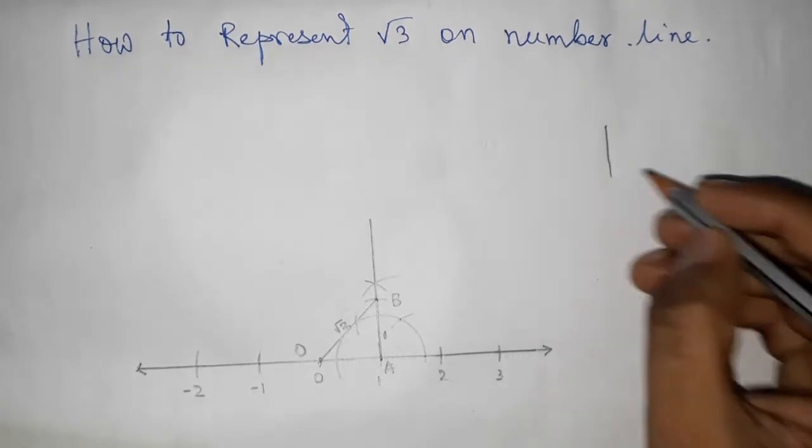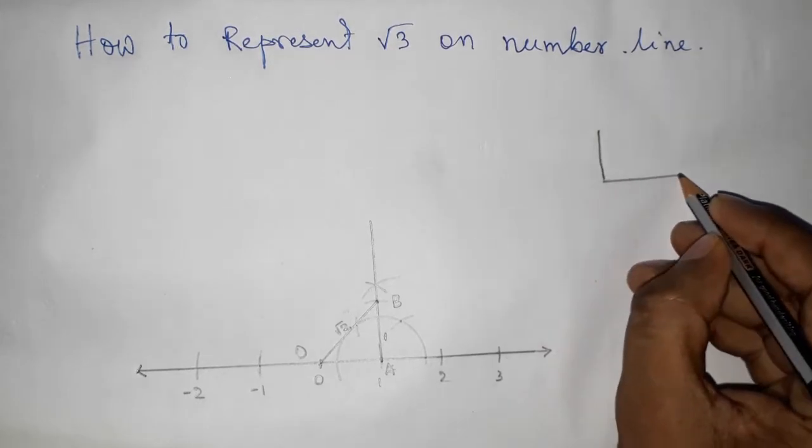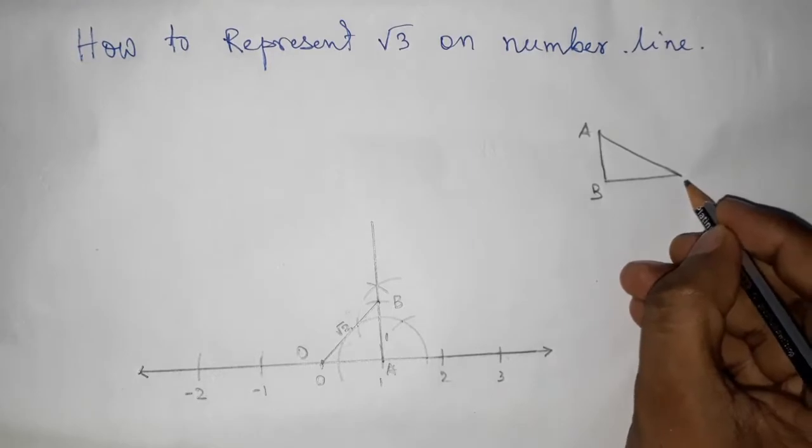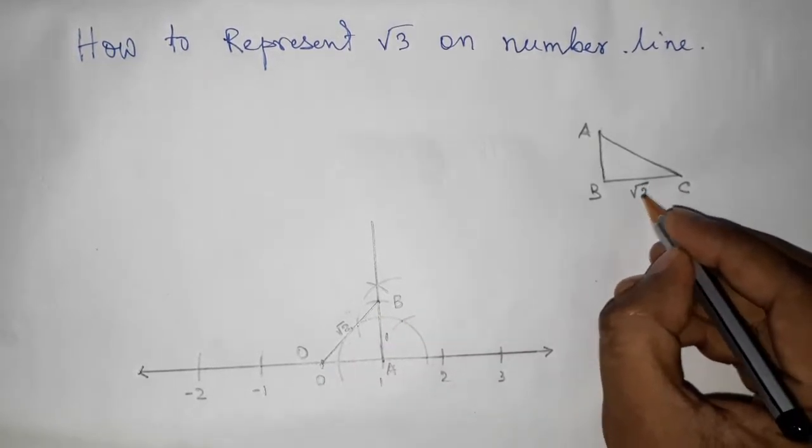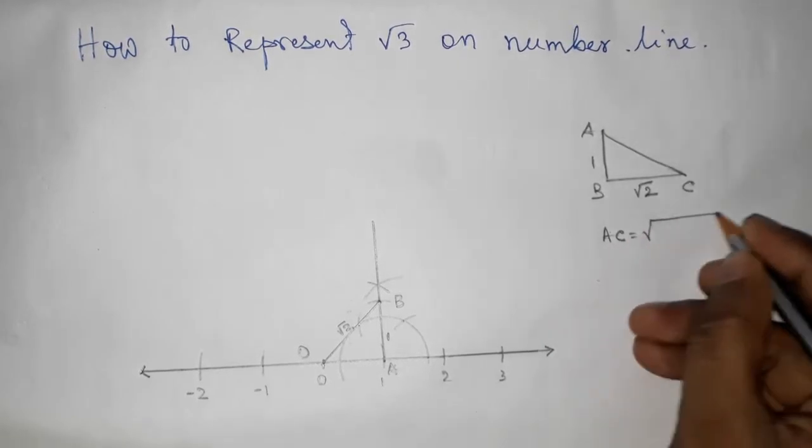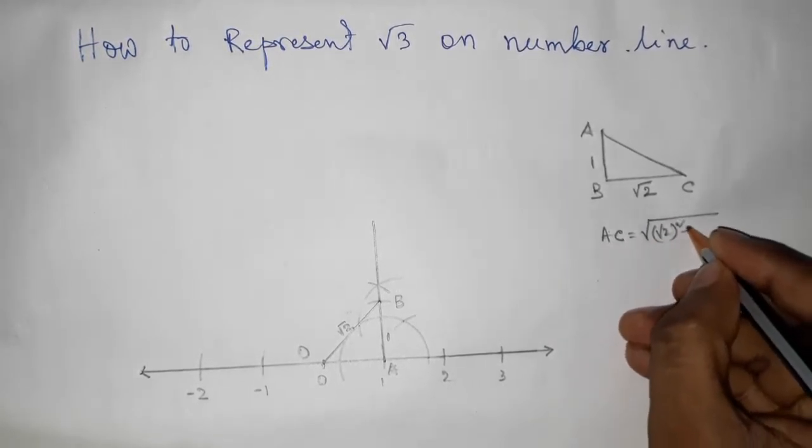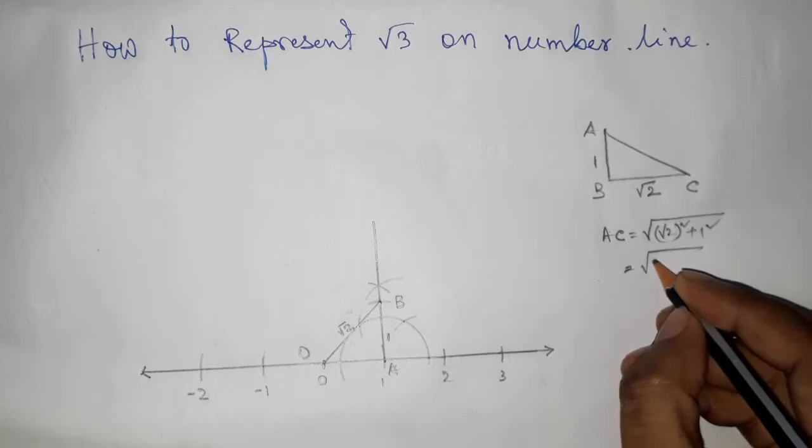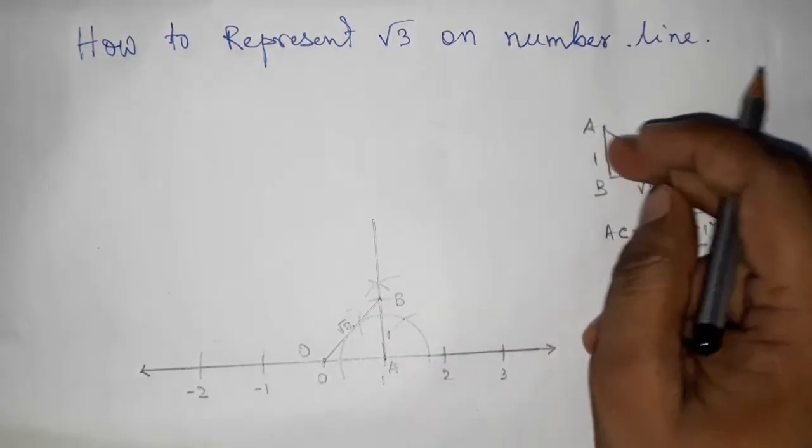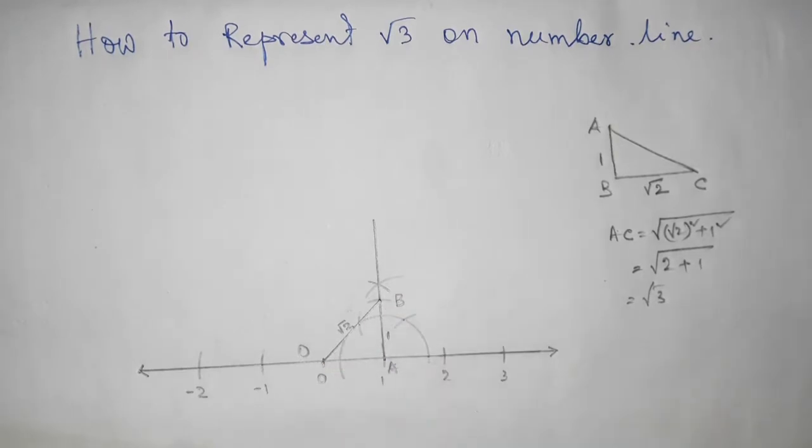Now I am going to discuss how to get root 3 from a right angle triangle whose base is root 2 and perpendicular is 1. So hypotenuse equals root of root 2 square plus 1, so from this we can get root 3. Now I am using this concept here on the point B to get root 3.